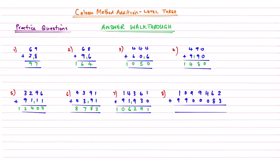Question 8: 2 add 3 is 5. 6 add 8 gives me 14 — carry the 1, write the 4 underneath. 4 add nothing is 4, add your carry of 1 gives 5. 9 add nothing is 9. 9 add nothing is 9. Nothing add 9 is 9. And then 1 add 9 gives me 10. Lots of 9s in that one — hopefully you've seen where you made a mistake on those.